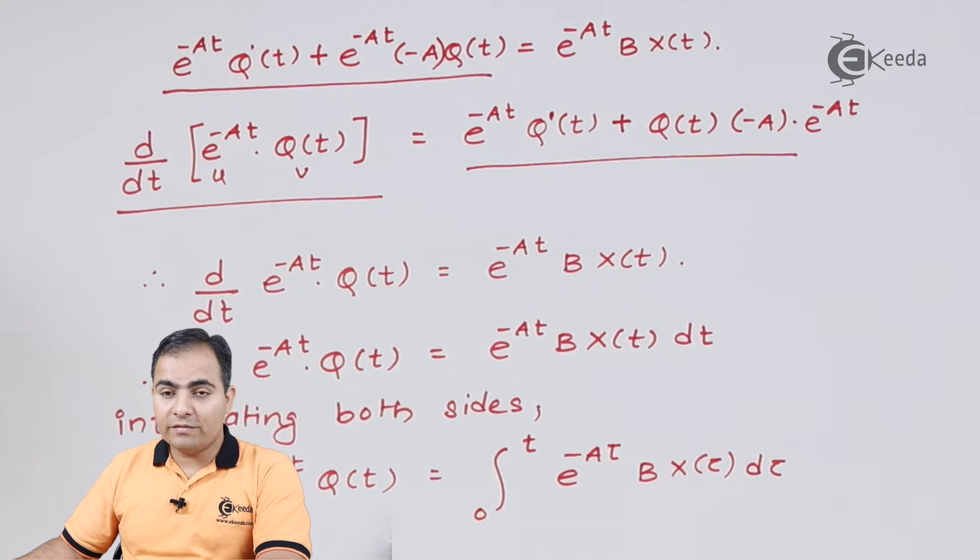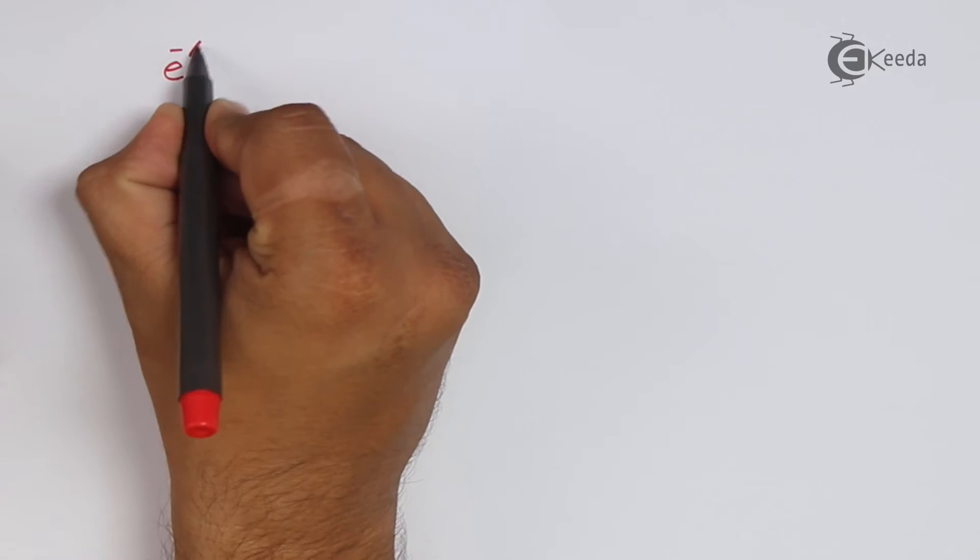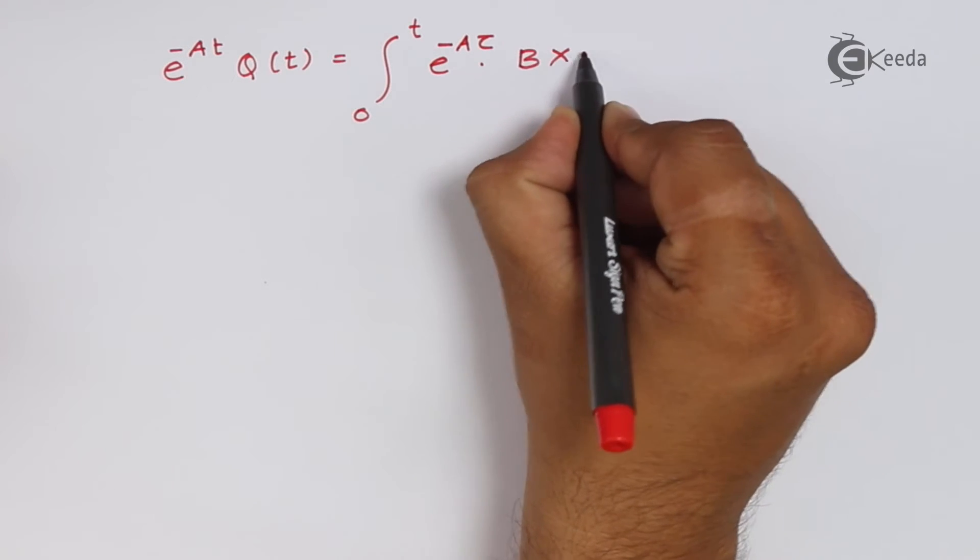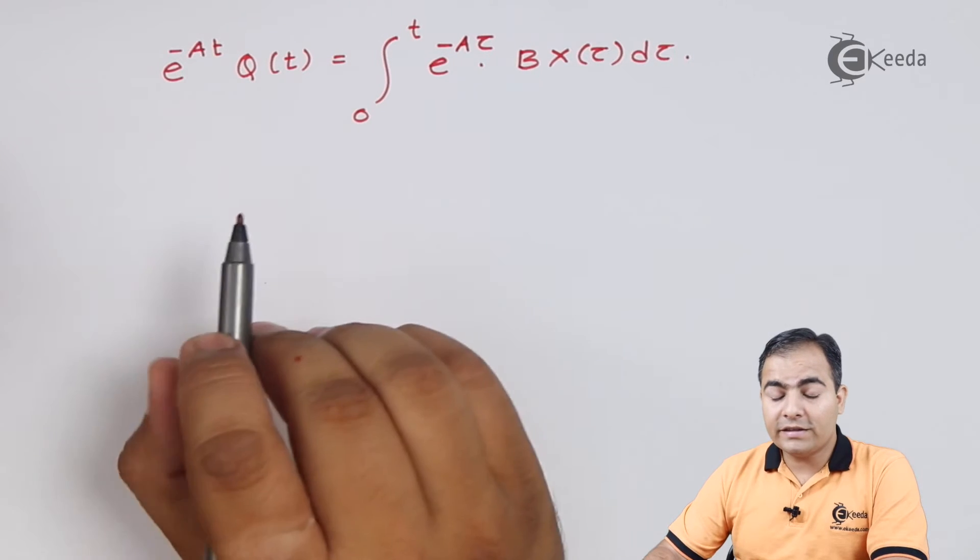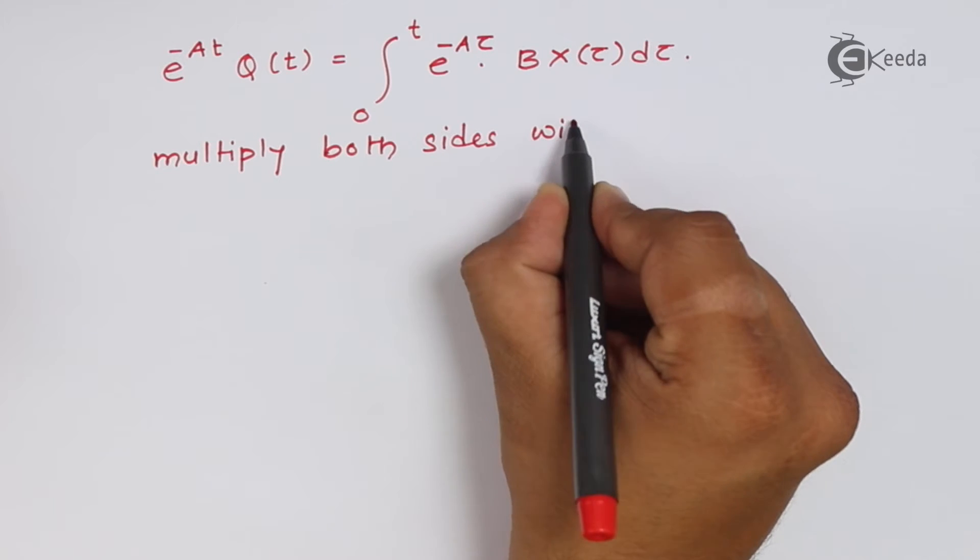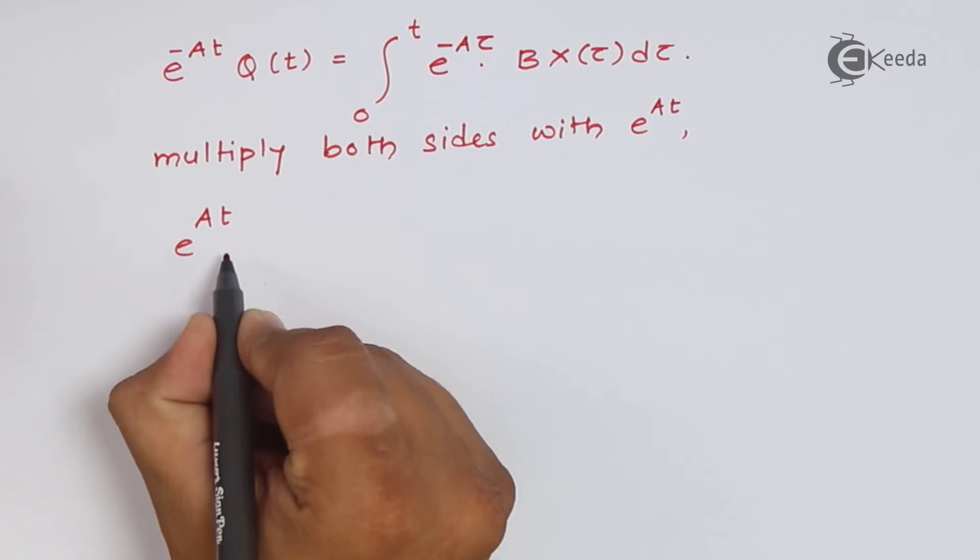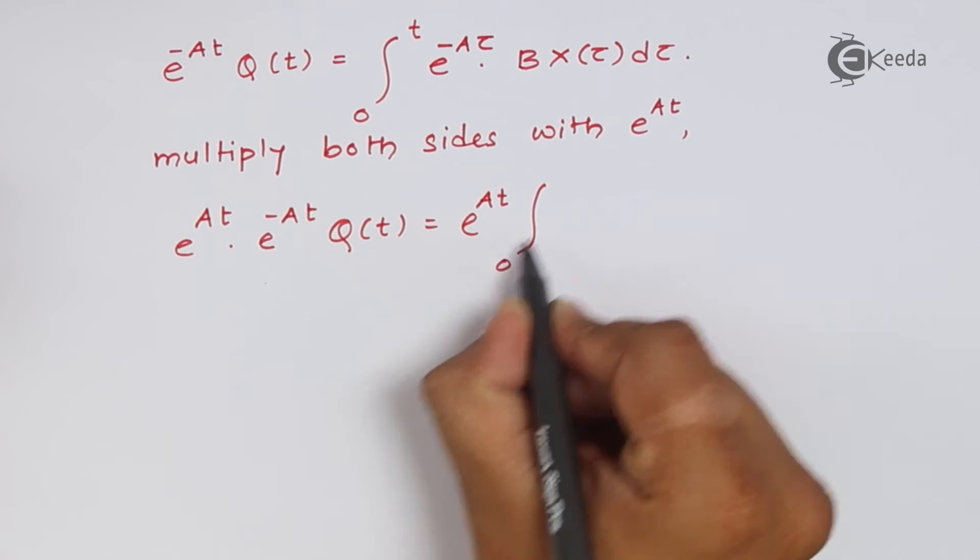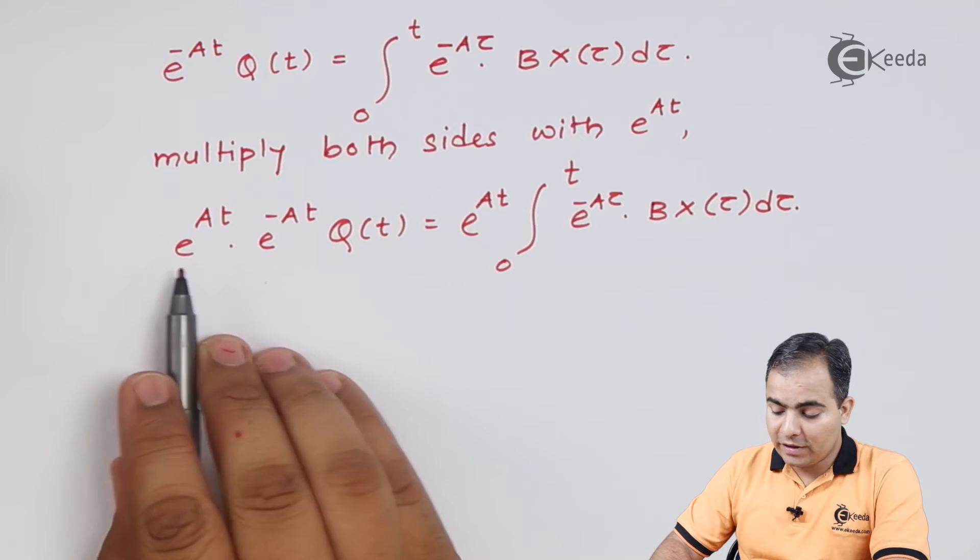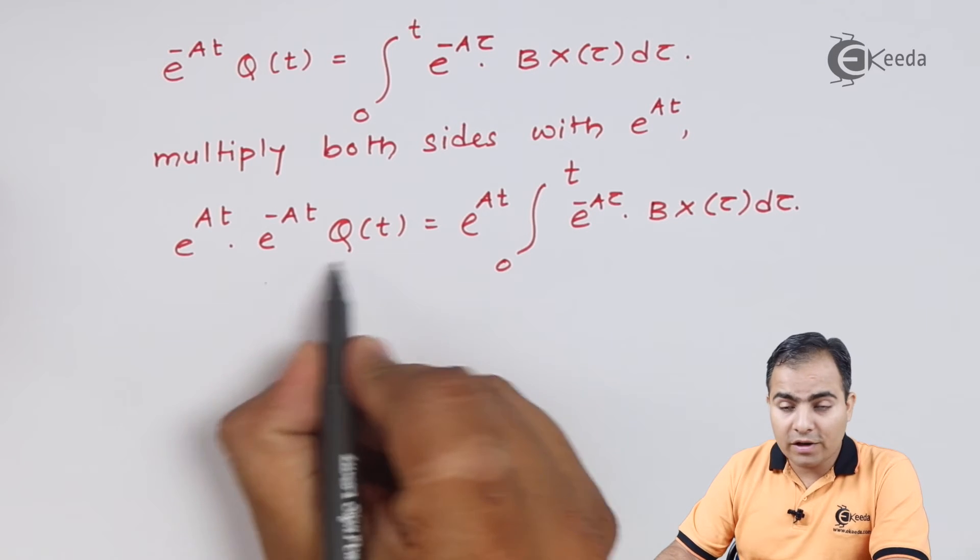Now multiply both the sides by e to the power At. If I multiply both sides by e to the power At, look at here. On left hand side here the bases are same, we have exponential terms. And if the bases are same then powers always get added. So At minus At becomes 0 and e to the power 0 is always 1. So on left hand side we have only q(t).